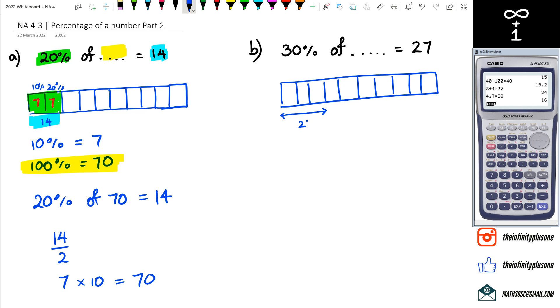So basically three of these boxes is equal to 27 because that's what 30% is. So I'm going to do 27 divided by 3 which is equal to 9. So that means each of these boxes is equal to 9.